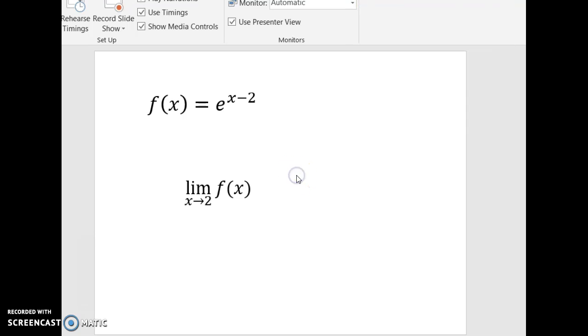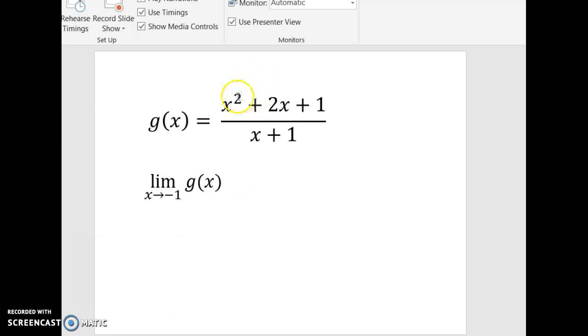What if it's a little bit different function? I'm trying to move PowerPoint here. Alright, so this is a rational function, meaning there's stuff on the top and stuff on the bottom. And we want to know what happens as we go to negative 1.